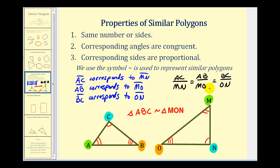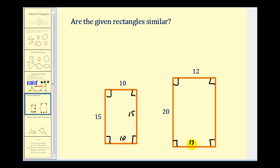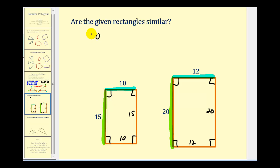Now let's look at some examples. Here we're given two rectangles and asked to identify if they're similar. We need to check two things: the corresponding angles are congruent and the corresponding sides are proportional. Since both are rectangles, all angles are 90 degrees and therefore congruent. So we check if corresponding sides are proportional. Opposite sides of rectangles are the same length, so the sides are 15 and 10 on one rectangle, and 12 and 20 on the other. We write the proportion: the ratio of 10 to 12 must equal the ratio of 15 to 20 if these are similar.